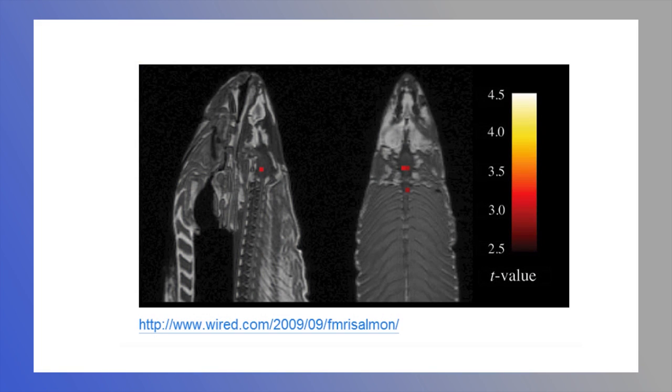So to give you an example of multiple comparisons that's sort of famous in the field that I work in, someone took a dead salmon and put it in a functional magnetic resonance imaging scanner. They ran the pixel by pixel analysis, actually it's three dimensions so it's often called a voxel instead of a pixel.